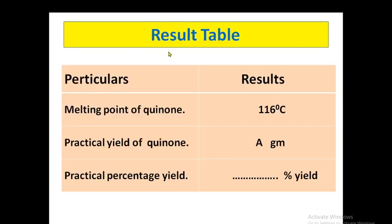Finally, you have to tabulate the result as follows. Melting point of quinone is 116 degrees Celsius. Then you have to write the practical yield of quinone in grams and finally practical percentage yield calculated according to the calculations.